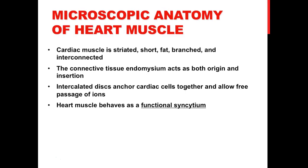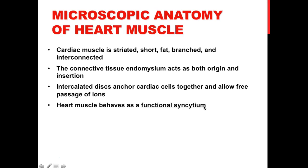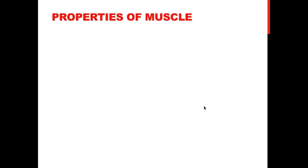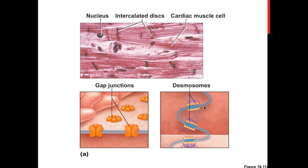The cardiac muscle is going to be striated, short, have branchings, and be interconnected. The endomysium acts as both an origin and insertion. One of the unique things about the cardiac muscle is that it has intercalated discs — none of the other muscles in your body have these. Also, the heart functions as a syncytium, meaning all the cells in the heart basically function as one unit together.